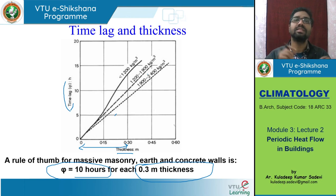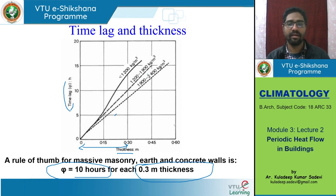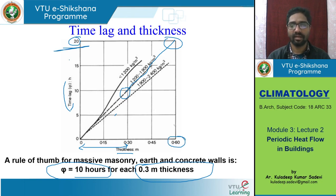We can increase the time lag by increasing the thickness. As you can see from this picture, adding another 0.3 meters of thickness — so going from 0.3 to 0.6 meters total — you will be getting 20 hours of time lag. So 0.6-meter thickness gives 20 hours of time lag. This is the relationship between time lag and thickness.